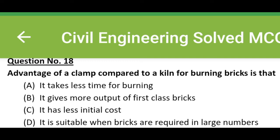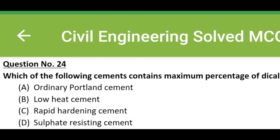Option D, it is suitable when bricks are required in large numbers. The correct answer is option C, it has less initial cost. Which of the following cements contains maximum percentage of dicalcium silicate? Option A, ordinary Portland cement. Option B, low heat cement.